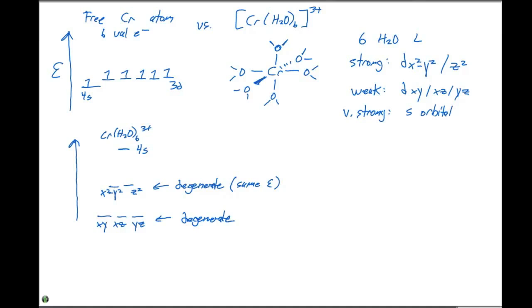And when we characterize these, we can say that the x² - y², and the z² are doubly degenerate, and the xy, xz, and yz are triply degenerate. Simply meaning that a doubly degenerate case has two orbitals with the same energy. A triply degenerate case means we have three orbitals with the same energy.